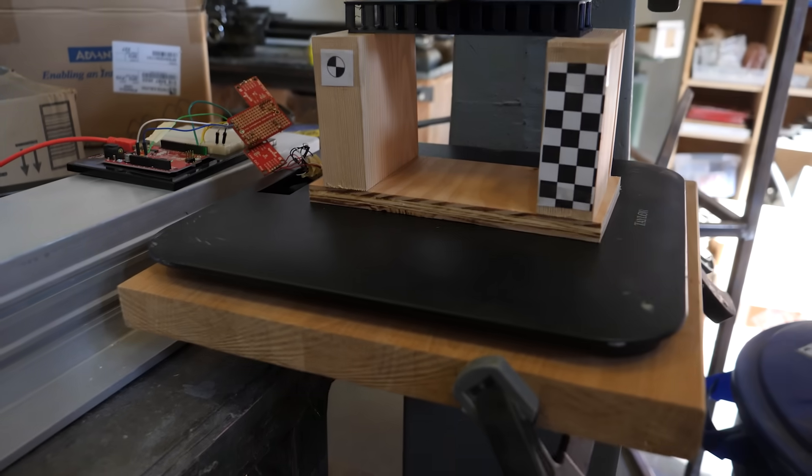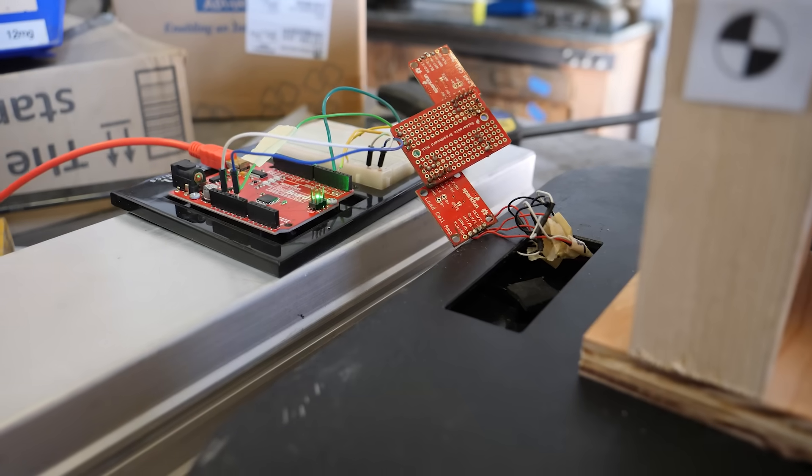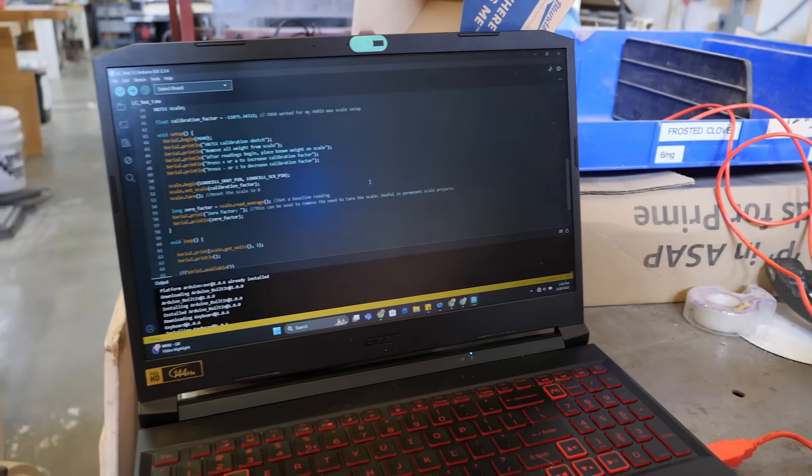To fix this, I dug up my old Arduino, cracked open the scale, and connected it to an old amplifier circuit I made way back in college. This way, I could record the load cell data directly to a laptop. And finally, it's time to watch some slow motion destruction.